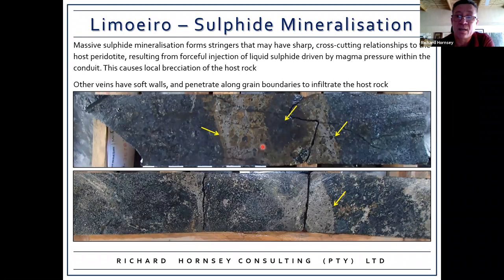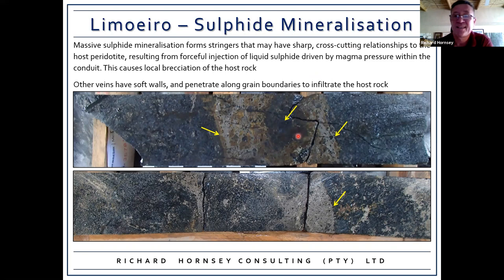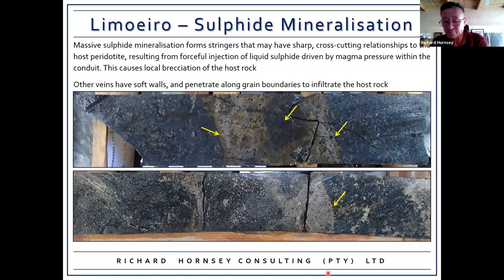Limoeiro hosts both disseminated and massive sulfide mineralization in the upper sequence, and the two are not directly related — there's no indication that where you have more disseminated you have more massive; they appear to be separate entities. The massive sulfide mineralization forms stringers with sharp, often cross-cutting relationships to the host pyroxenite, resulting from forceful injection of liquid sulfide driven by magma pressure into already-lithified rock. Other veins have soft walls — penetrating along grain boundaries and infiltrating the host rock.